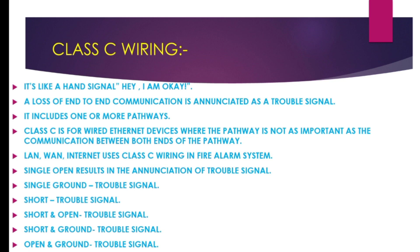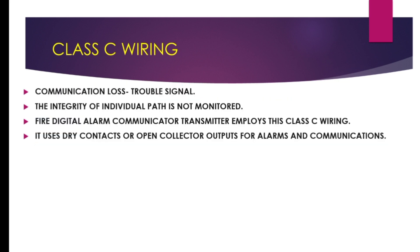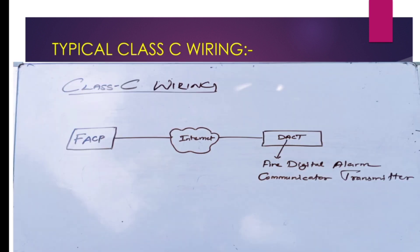LAN, BAN, and Internet use Class C wiring in fire alarm systems. Single open, single ground, short, short and open, short and ground, open and ground, and communication loss are all enunciated as trouble signals in Class C wiring. The Fire Digital Alarm Communicator Transmitter (DACT) uses this Class C wiring in fire alarm systems.